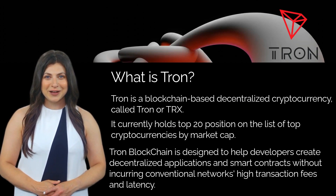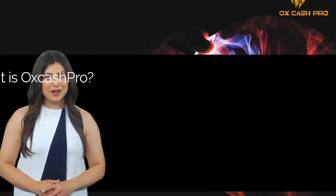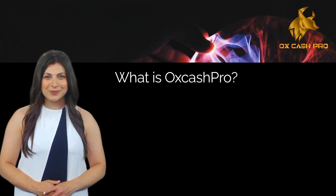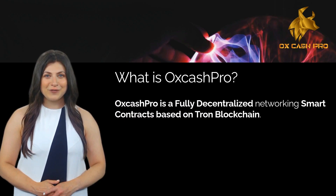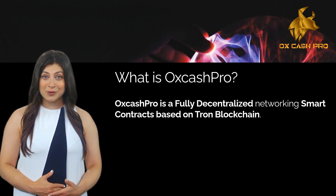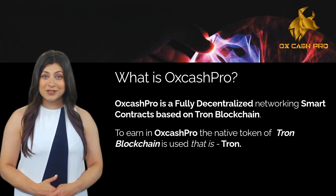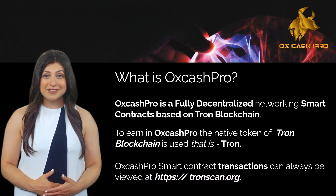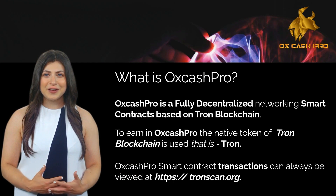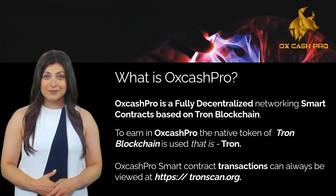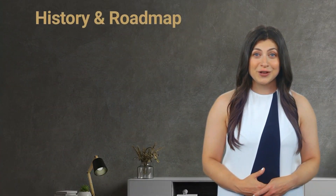What is AuxCash Pro and what is its relation with Tron blockchain? AuxCash Pro is a fully decentralized networking smart contract published on Tron blockchain. To earn in AuxCash Pro, the native token of Tron blockchain is used — that is TRX. AuxCash Pro smart contract transactions can always be viewed directly on the Tron blockchain website, TronScan.org.